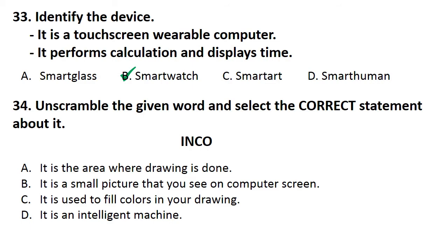Question number 34. Unscramble the given word and select the correct statement about it. After unscrambling the given word, the meaningful word that is formed is icon. So the answer is option B.